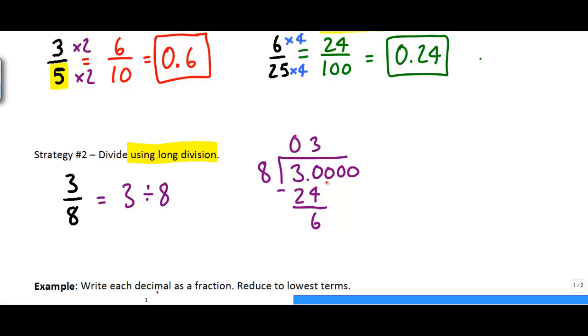And then I can bring down another 0 here to make 60. And 8 is going to go 7 times into 60 to make 56. 60 minus 56 is 4. Bring down another 0 to make 40. And then 8 goes 5 times into 40. And I'm done. My decimal place is right here. And so 3 eighths is the same as 0.375.